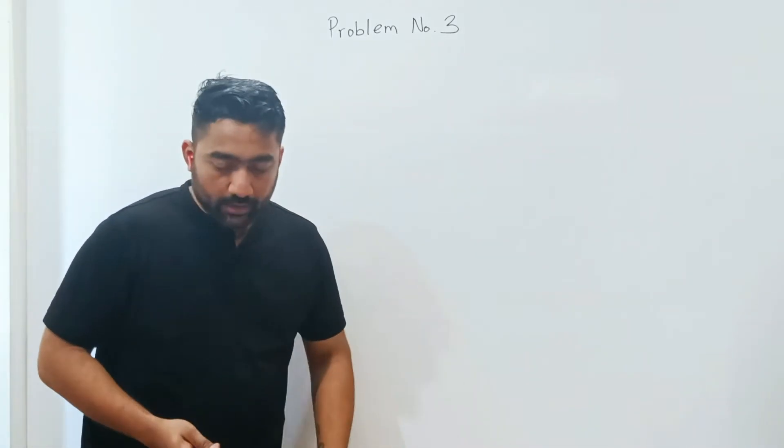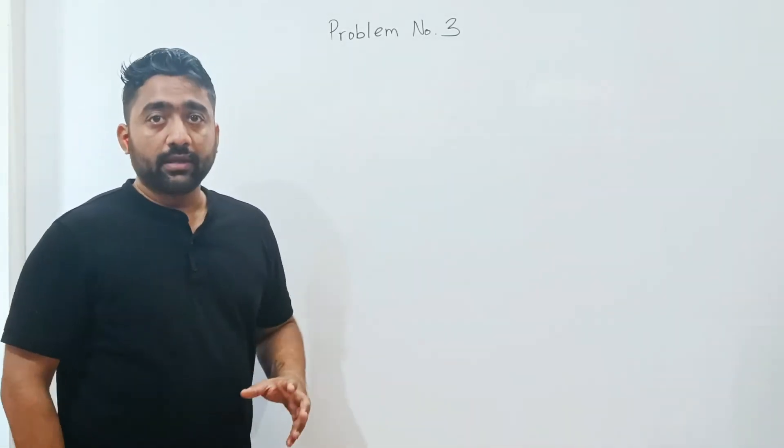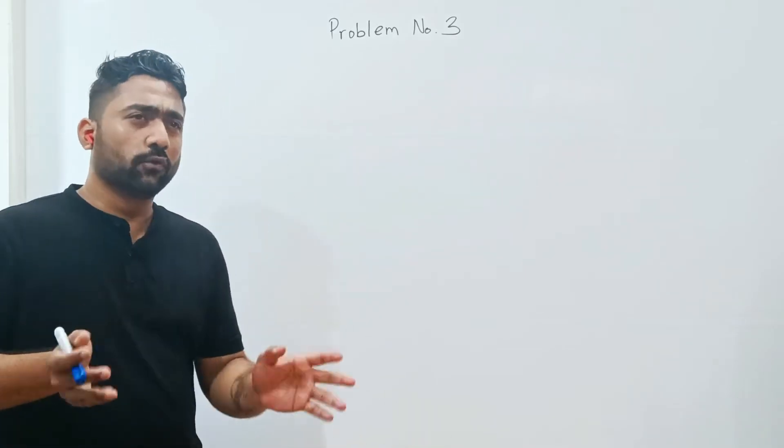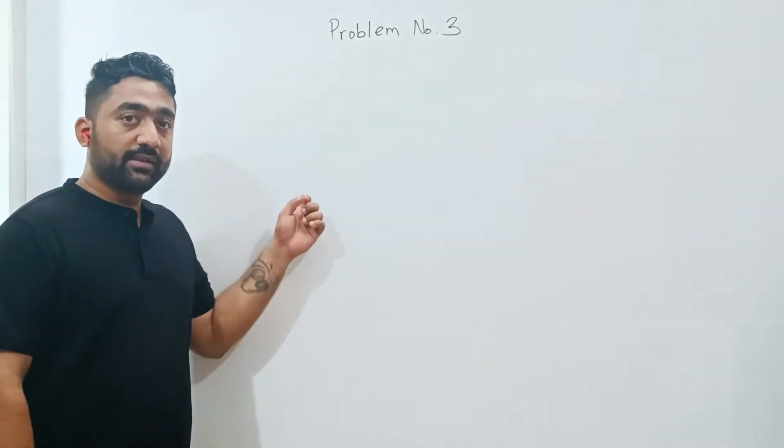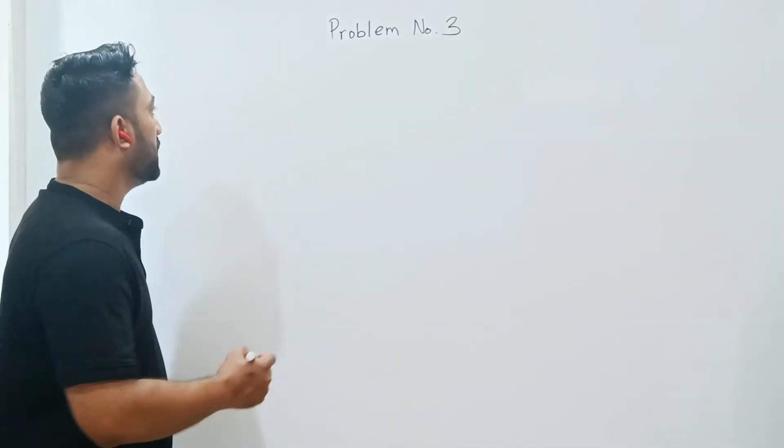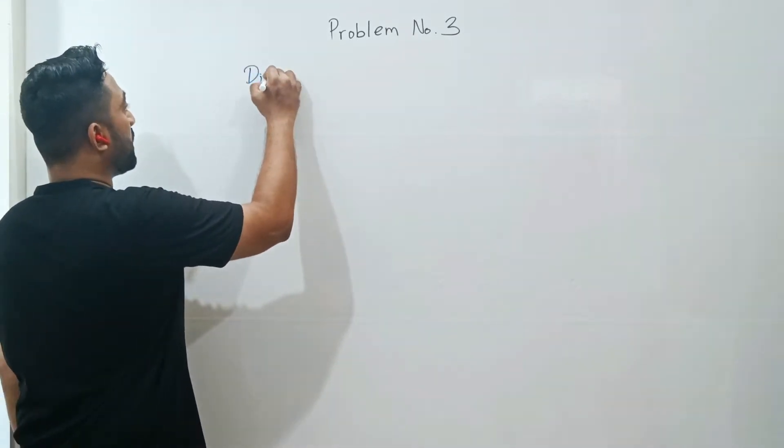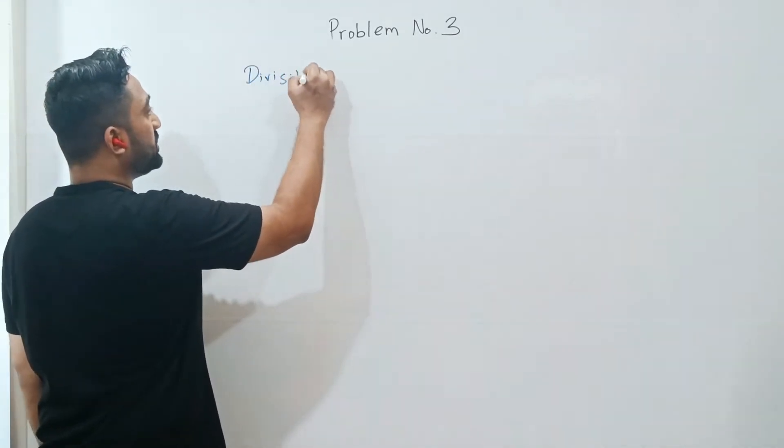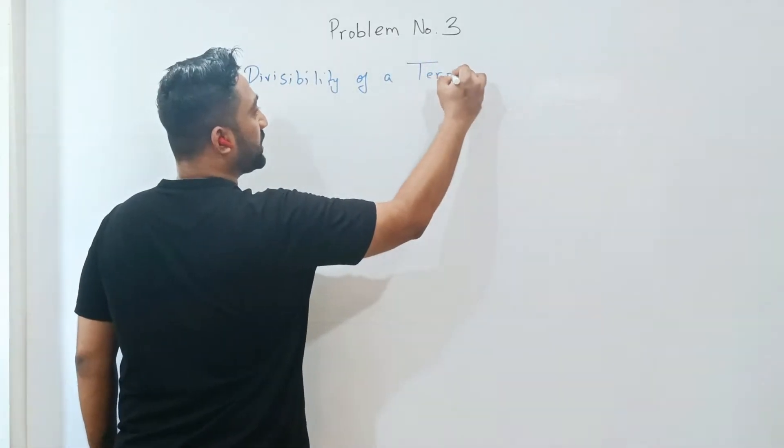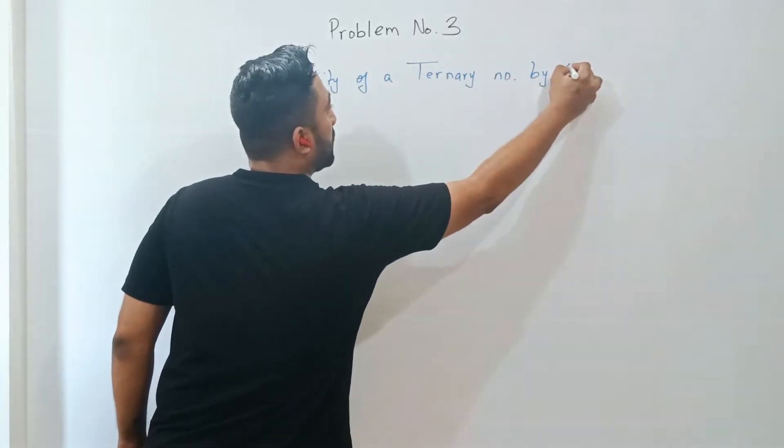In the past video we saw how to create a finite state machine to solve problems based on divisibility of binary numbers by any divisor. For example, we had taken 4. So in this problem, we are going to take a similar kind of problem: divisibility of a ternary number by 4 or 3 or whatever. This will be the last example of this type. So let's take an example, divisibility of a ternary number by 4.